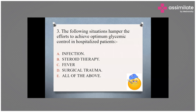The correct answer is all of the above. Even a critically ill diabetic patient who develops infection or fever may not achieve glycemic targets. If the patient is put on high-dose glucocorticoid therapy, glycemic control can be hampered and sugar levels might become raised and uncontrollable. Any kind of surgical trauma can also affect control.